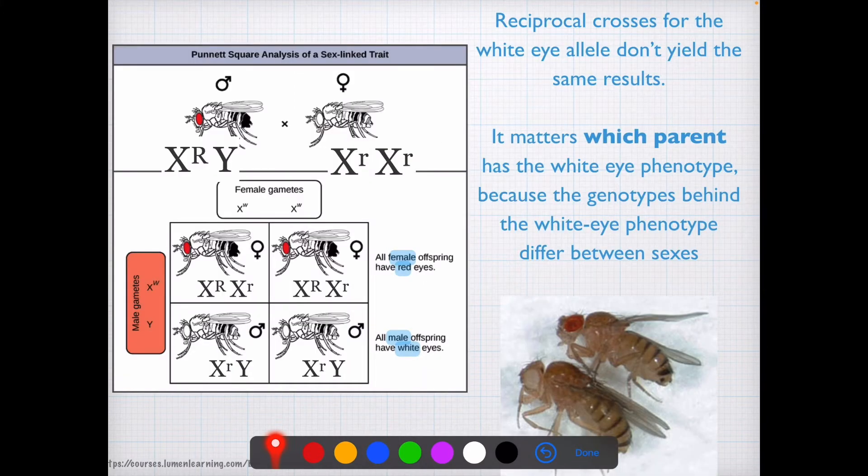So, for example, in fruit flies, there is a gene on one of the sex chromosomes for red eyes. And you'll see that individuals who are males are more likely to have white eyes.